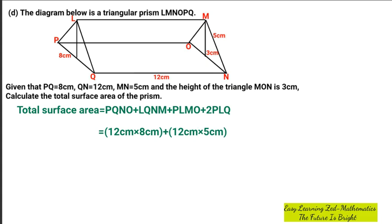As well as the length of PLMO is 12 cm multiplied by 5 cm. And then we're going to multiply by the length multiplied by the height. We are told the height is 3 cm. So we're going to have 2 multiplied by 1 over 2 times 8 times 3.